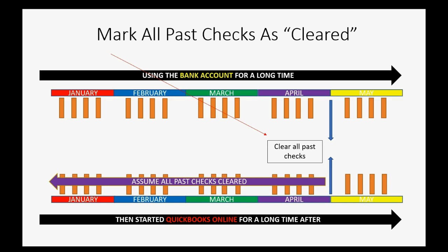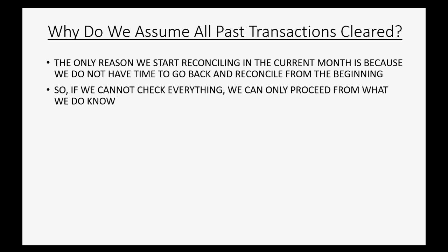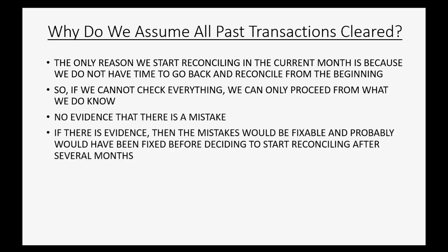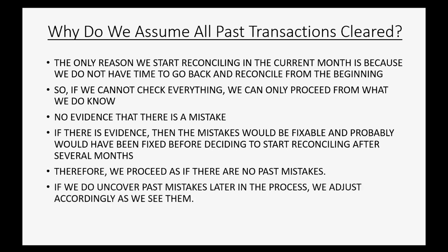Well, let's think of the context of the situation. The only reason we start reconciling in the current month is because we do not have time to go back and reconcile from the beginning. If we cannot check everything, we can only proceed from what we do know. There's no evidence that there is a mistake, because if there were evidence, the mistakes would likely have been fixed before deciding to start reconciling after several months. Therefore, we proceed as if there are no past mistakes. If we uncover past mistakes later, we adjust accordingly.